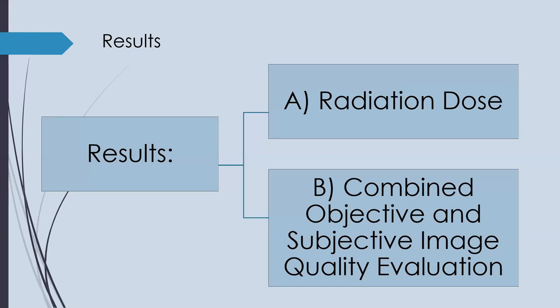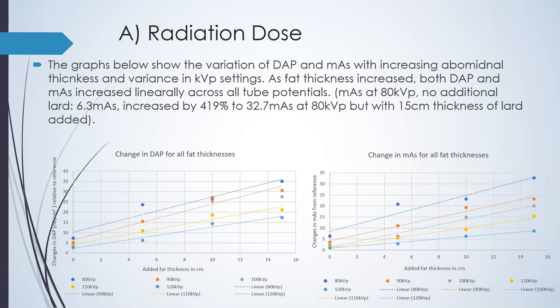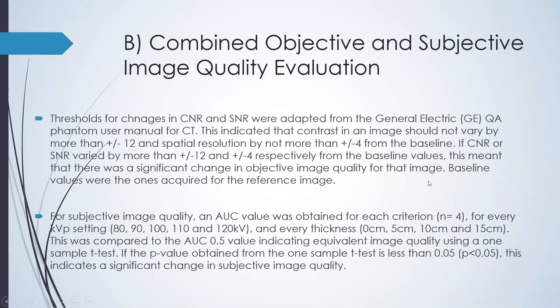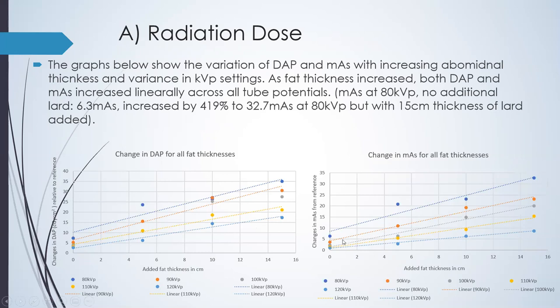Moving on to the results, which were split into radiation dose and combined objective and subjective image quality evaluation. For radiation dose, the graphs show the variation of DAP and MAS with increasing abdominal thickness and variance in KVP settings. It was shown that as fat thickness increased, both DAP and MAS increased linearly across all tube potentials. For example, MAS at 80 KVP with no additional lard was 6.3 MAS; however, this increased by 419% to 32.7 MAS at 80 KVP with 15 cm thickness of lard added.